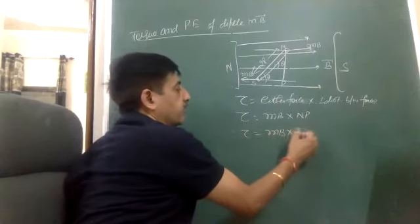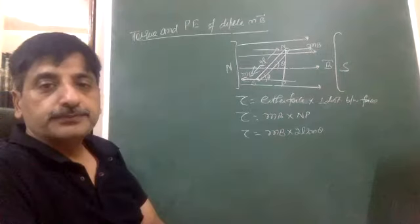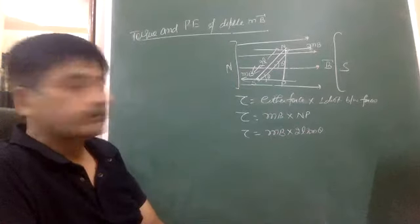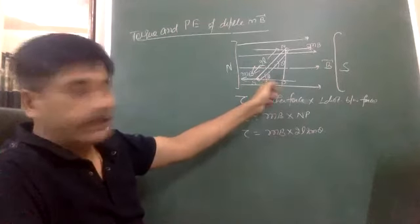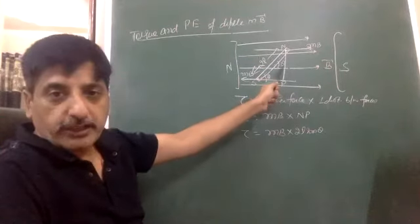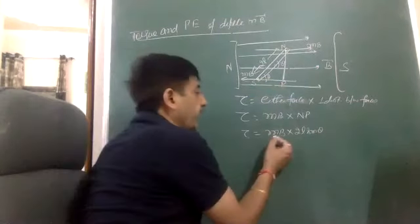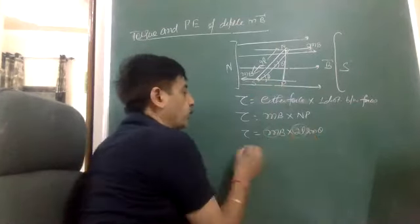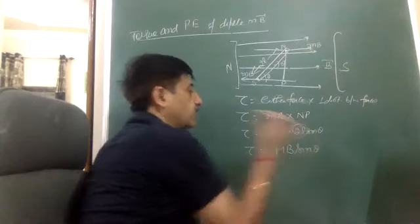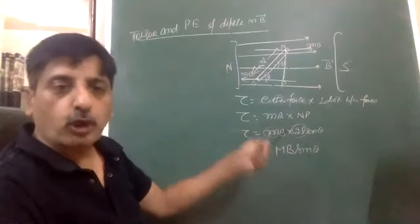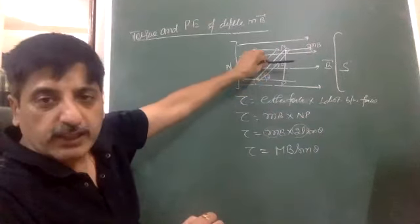The perpendicular component of the dipole length is 2L sin theta. Writing the right-angled triangle, this component is 2L sin theta. With M into 2L defining the dipole moment, the torque formula becomes tau = M B sin theta. The torque will align the dipole along the magnetic field direction.